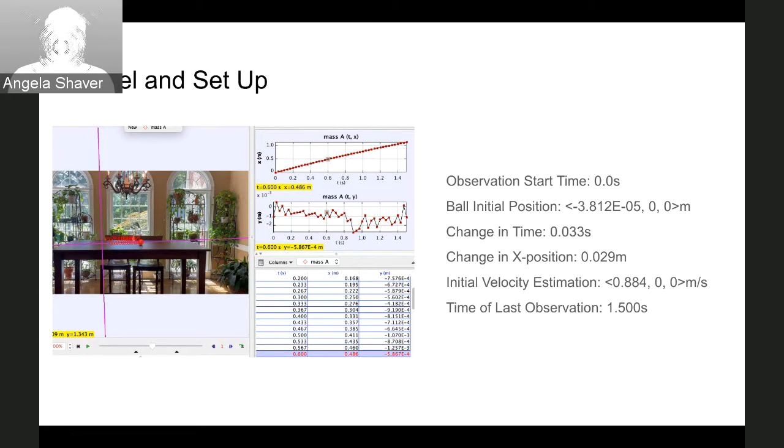To set this model up, I changed the startup code by observing the following data on the screen above. The start time was 0 seconds. The initial position vector was negative 0.00003812, 0, 0 meters. The change in time that I used was 0.033 seconds, and the change in the x position was 0.029 meters. Using the velocity formula, the initial velocity vector was 0.884, 0, 0 meters per second. In addition, the time of the last observation was 1.5 seconds.